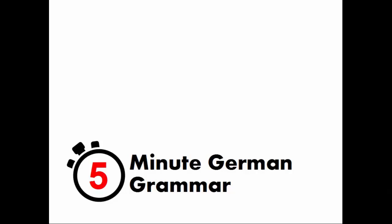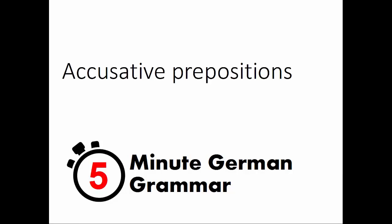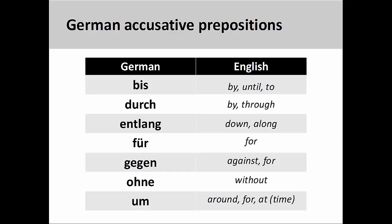Welcome to 5-Minute German Grammar. This presentation will cover accusative prepositions. In a prior presentation, we learned how accusative prepositional phrases function and saw that there are seven accusative prepositions in German: bis, durch, entlang, für, gegen, ohne, and um. This presentation will explain how to use these prepositions in a sentence.